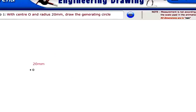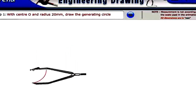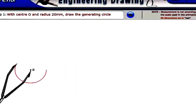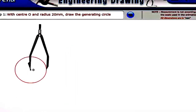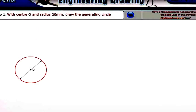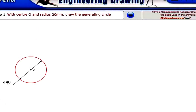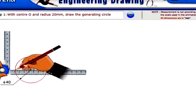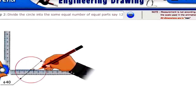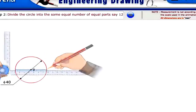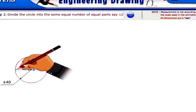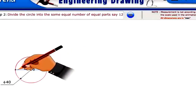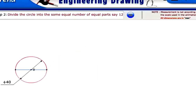With the centre O and radius 20 mm, draw the generating circle. Divide the circle into some equal number of equal parts, say 12.